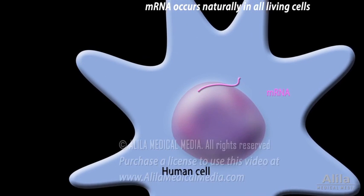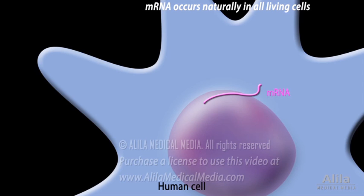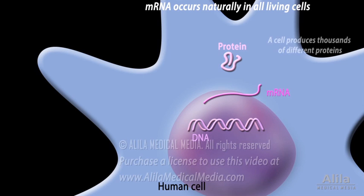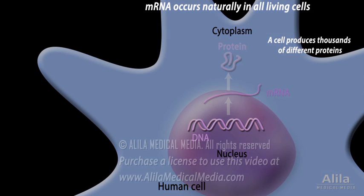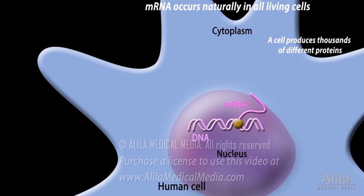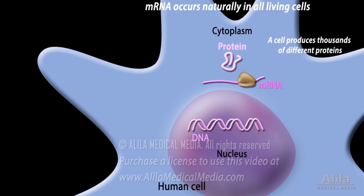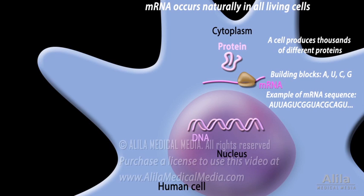As its name suggests, mRNA is basically a messenger carrying a genetic message from DNA to protein. In order to function, a human cell needs to constantly produce proteins based on genetic information in its DNA. Because DNA is located in the nucleus of the cell and protein synthesis occurs in the cytoplasm, an intermediate molecule is required to transmit the information. mRNA copies the information from DNA and brings it to the cytoplasm, where it is translated into protein. mRNA consists of four basic building blocks called A, U, C, and G. The information it carries is the sequence of these letters.